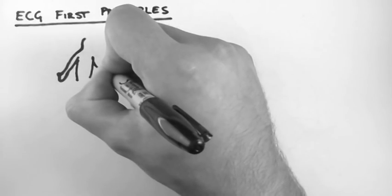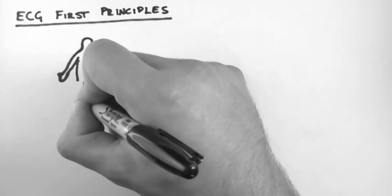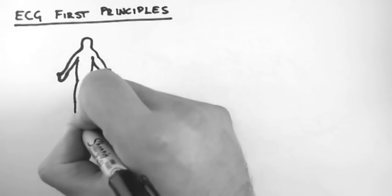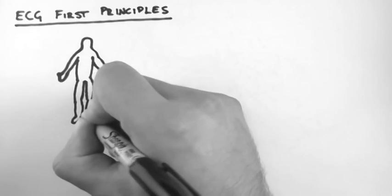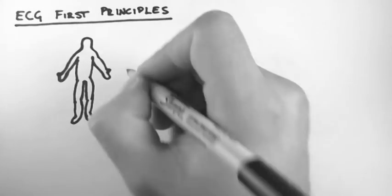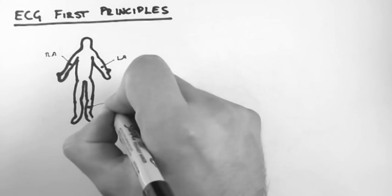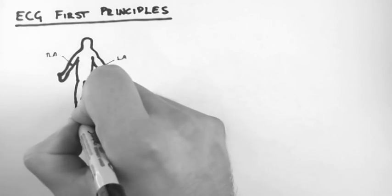So first of all we're going to look at where you attach the leads of an ECG machine to a patient. First of all, there are four leads which are attached to the limbs of a patient. These are abbreviated LA for left arm, RA for right arm, LL for left leg and RL for right leg.